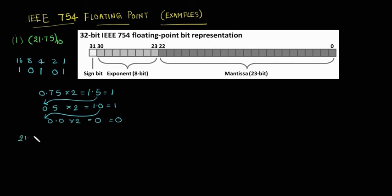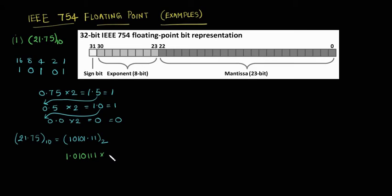Now 21.75 base 10 equals 10101.11 base 2. But we have to convert this number into normalized form. Before the binary point we must have only one digit and that should be a 1. So we shift all these bits to the right side of the binary point, multiplying by 2 power 4. So we get 1.0101111 times 2 power 4. This is the normalized form.